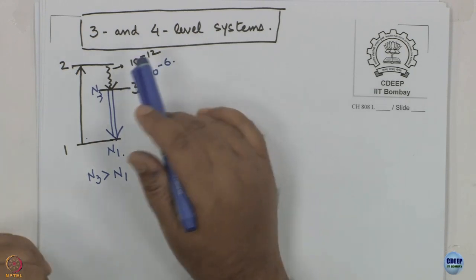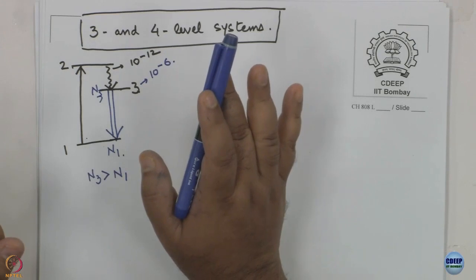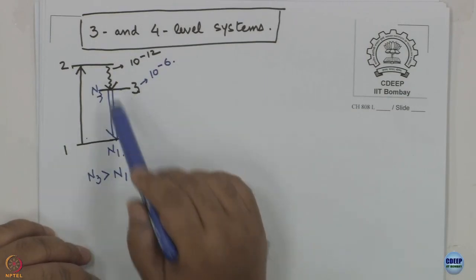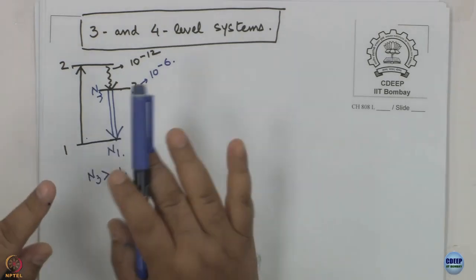Level 3 is very, very long-lived. If all the numbers work out — and you can get an actual feel by working out the differential equations — then you can hope to achieve population inversion between level 3 and level 1. And once that is achieved, you can have lasing.